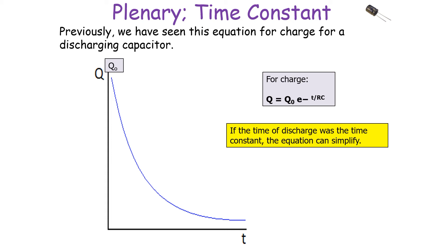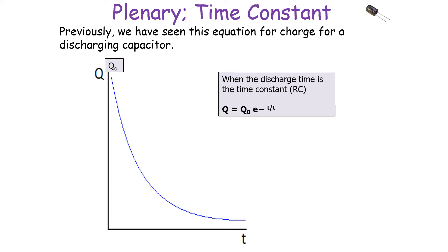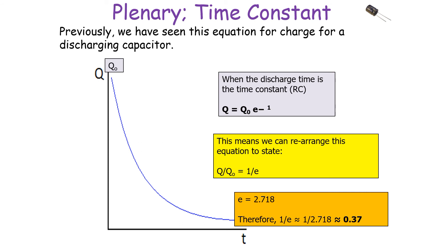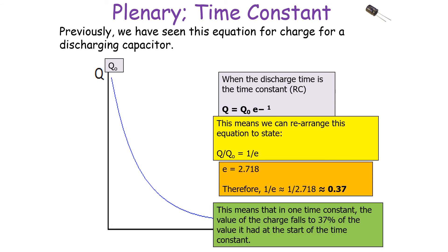The larger the resistance of the circuit the capacitor is in, the longer it takes to charge or discharge. We can simplify our equations using this idea: if the time of discharge equals the time constant, then RC equals T, so Q equals Q0 times E to the minus T over T, which becomes E to the minus 1. Rearranging: Q over Q0 equals E to the minus 1, or 1 over E. Since E equals 2.718, 1 over 2.718 equals 0.37. So in one time constant, the value of charge falls to 37% of the value it had at the start.